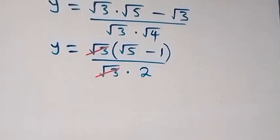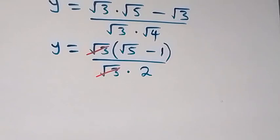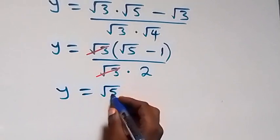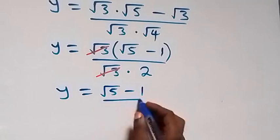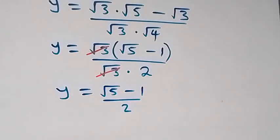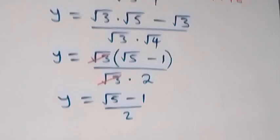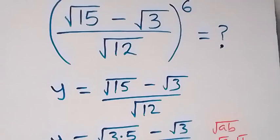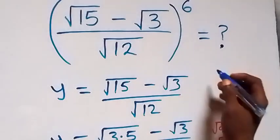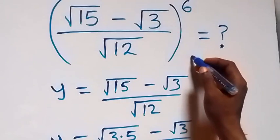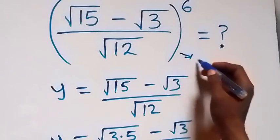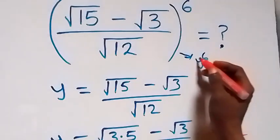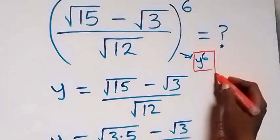We are left with y equals (√5 - 1) over 2. Don't forget what we have represented as y. This means what we are finding is y raised to the power of y — specifically, we are interested in finding the value of y raised to the power 6.